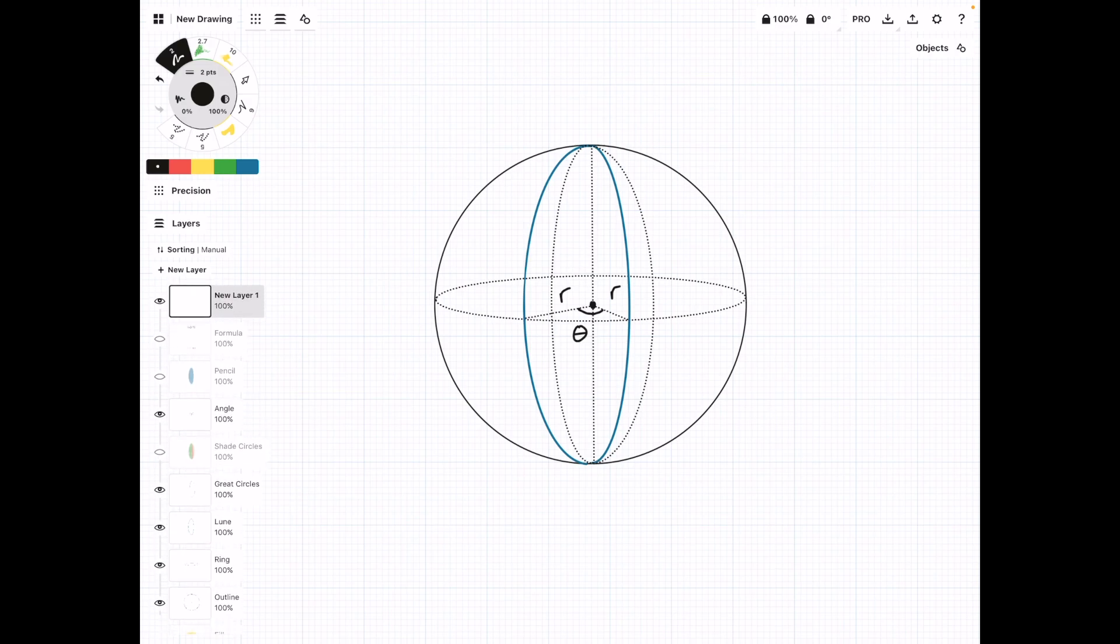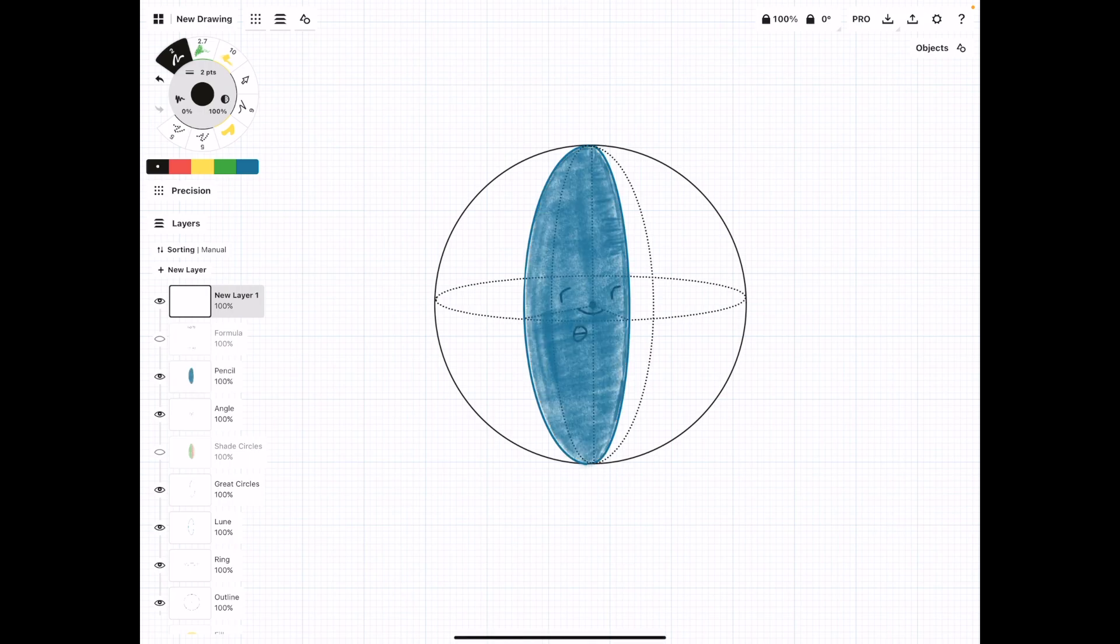Now we can imagine on the surface of the sphere, this intersection can be colored in like this. And what we have here is a loon. Because we're on a sphere, this is technically a spherical loon. And we want to find the surface area of this space.